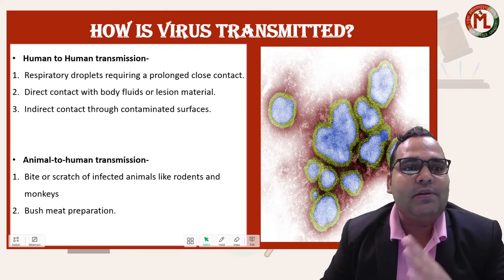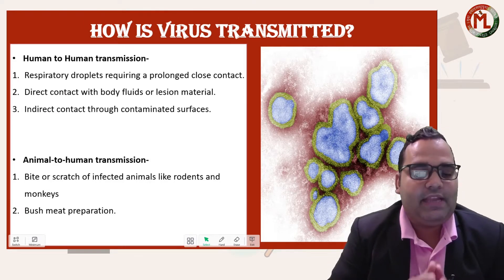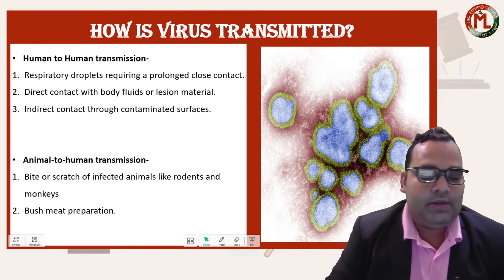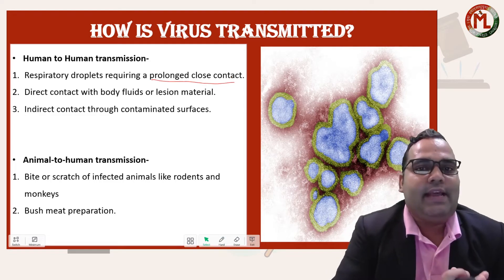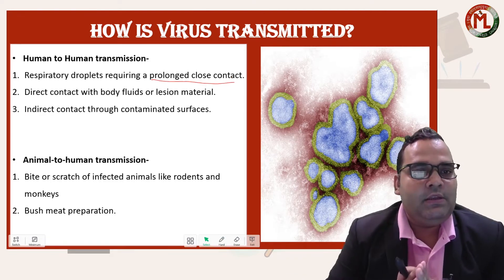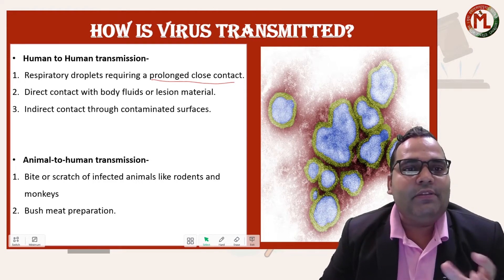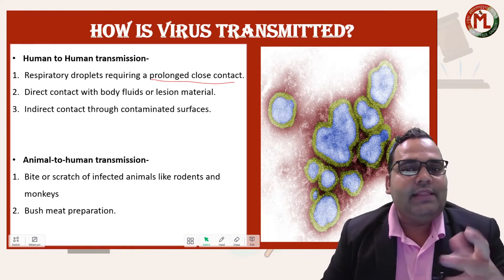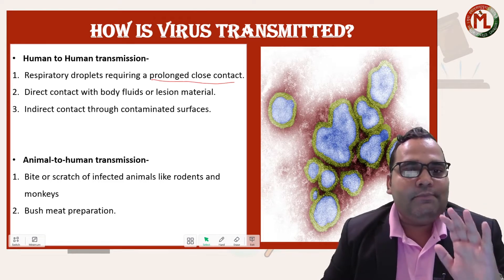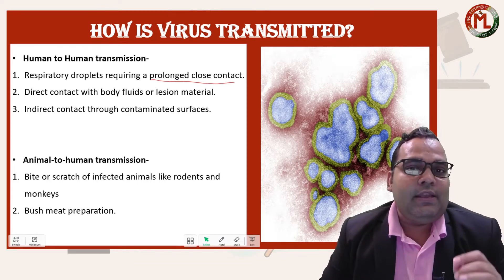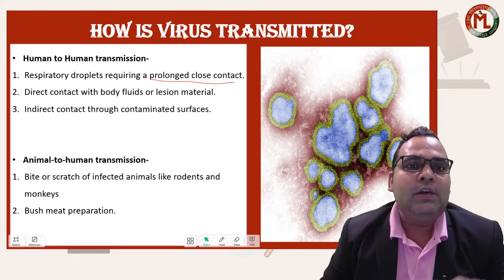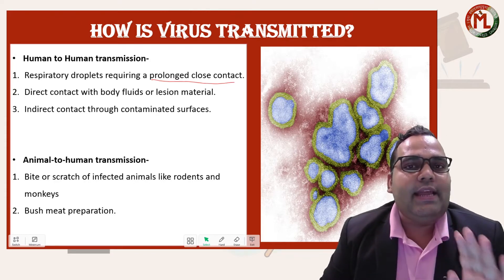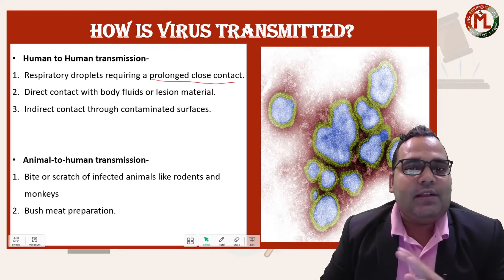For human-to-human transmission, the modes include respiratory droplets — if a person is exposed to the respiratory droplets of an infected individual for a prolonged period of close contact. Transmission also occurs through direct contact with body fluids or lesion material (infected cells), or through contact with contaminated surfaces that may contain liquid or respiratory droplets of an infected person.